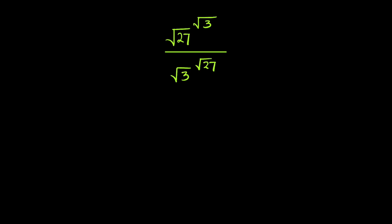This problem requires us to simplify the square root of 27 raised to the power of square root of 3, divided by square root of 3 raised to the power of square root of 27.